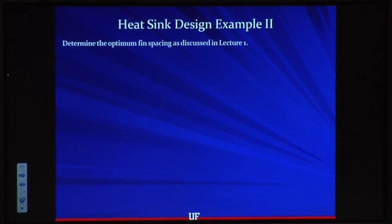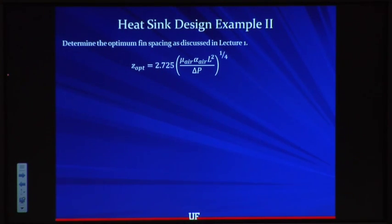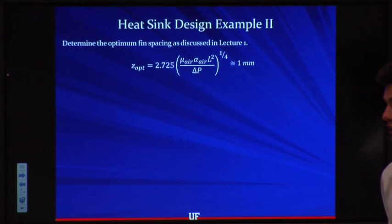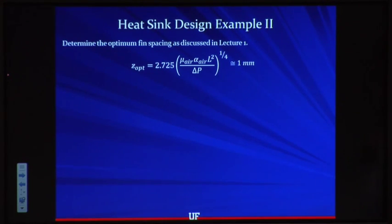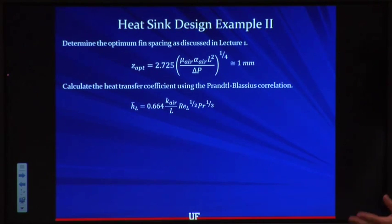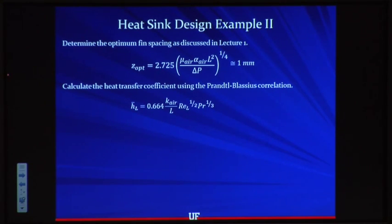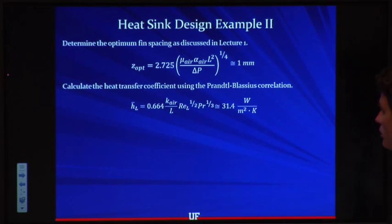We want to determine the optimum fin spacing using the z-optimum equation from Lecture 1, which is a function of L and delta-P and the thermal fluid properties. Assuming L equals 5 centimeters for the aluminum case, z-optimum is about 1 millimeter. We then calculate the heat transfer coefficient using the Prandtl-Blasius correlation for external flow, and since we know u-infinity, the Reynolds number, and L, we find h̄ is approximately 31 W/m²K.